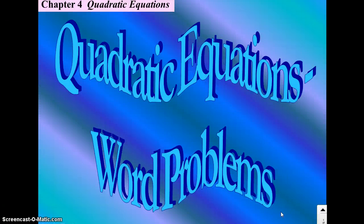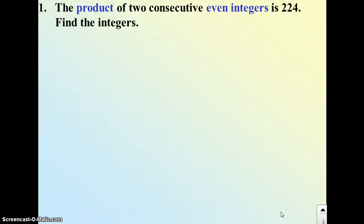Welcome, Math 20-1s. We're going to do quadratic equations. We're going to solve some word problems using quadratic equations today. First question. First word problem: the product of two consecutive even integers is 224. Find those integers.